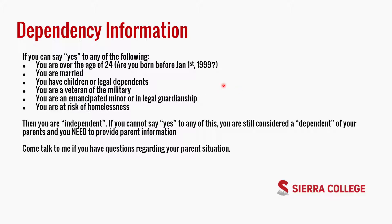There is something the government looks at called your dependency status. If you can say yes to any of the following — you're over the age of 24, you're married, you have kids or legal dependents, you're a veteran, an emancipated minor, in guardianship, or at risk of homelessness — you're considered independent. Independent students do not need to put parent information on the FAFSA. If you cannot say yes to any of these, you're considered dependent, and dependent students do have to provide parent information on the FAFSA. If you feel like you can't provide parent information, come talk to me and I can help.